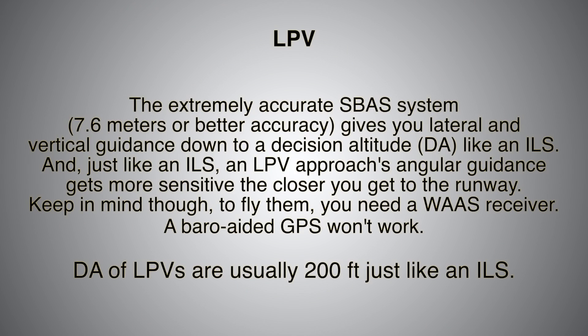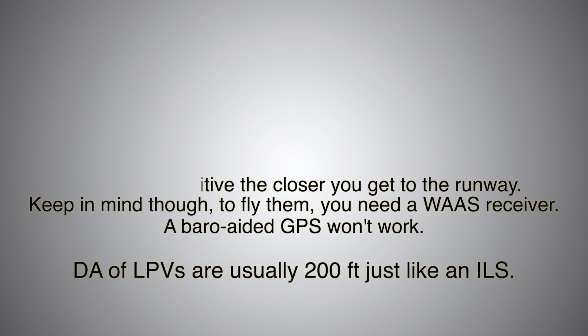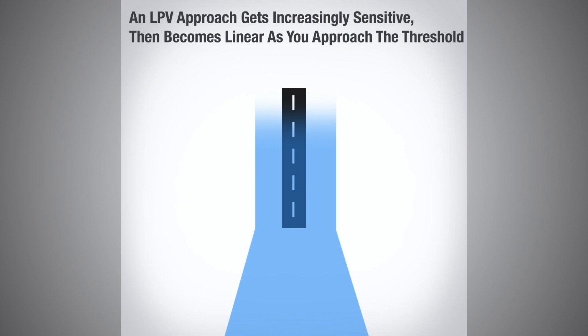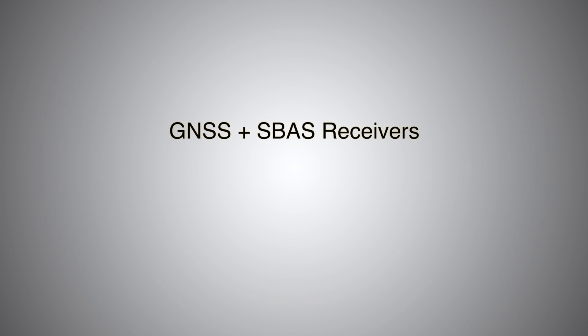Now let's look at the LPV. The extremely accurate SBAS system — about 7.6 meters accuracy or better — gives you lateral and vertical guidance down to a decision altitude like an ILS. And just like an ILS, an LPV approach angular guidance gets more sensitive the closer you get to the runway. To fly LPV, you need to have an SBAS receiver — a barometric-aided GPS would not work. The LPV decision altitude is usually 200 feet, just like an ILS, and sometimes it can get lower.